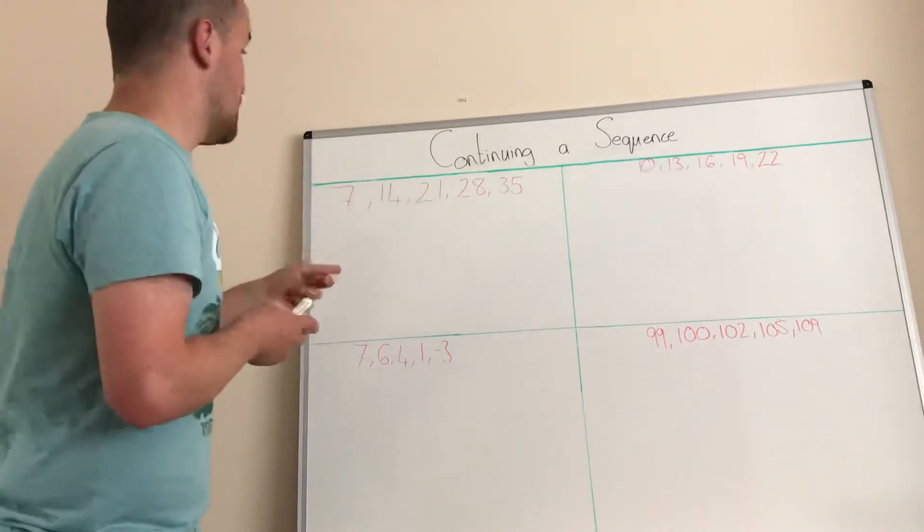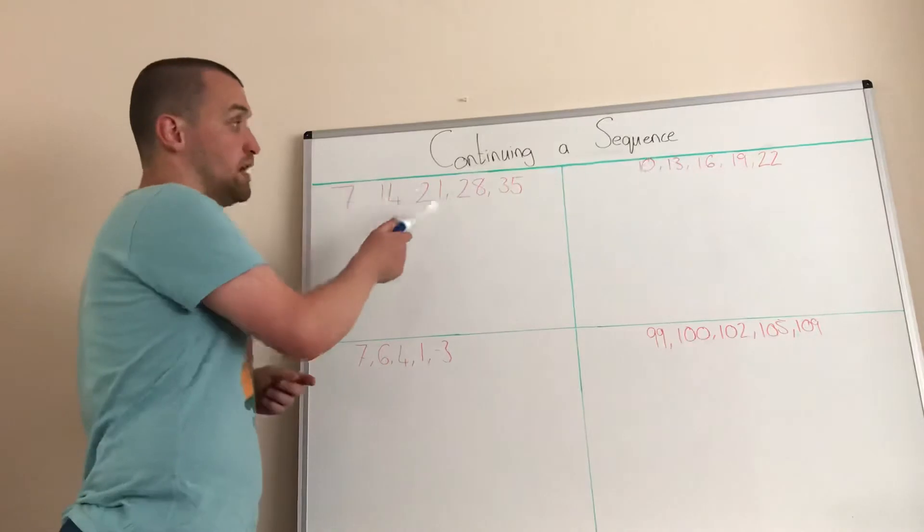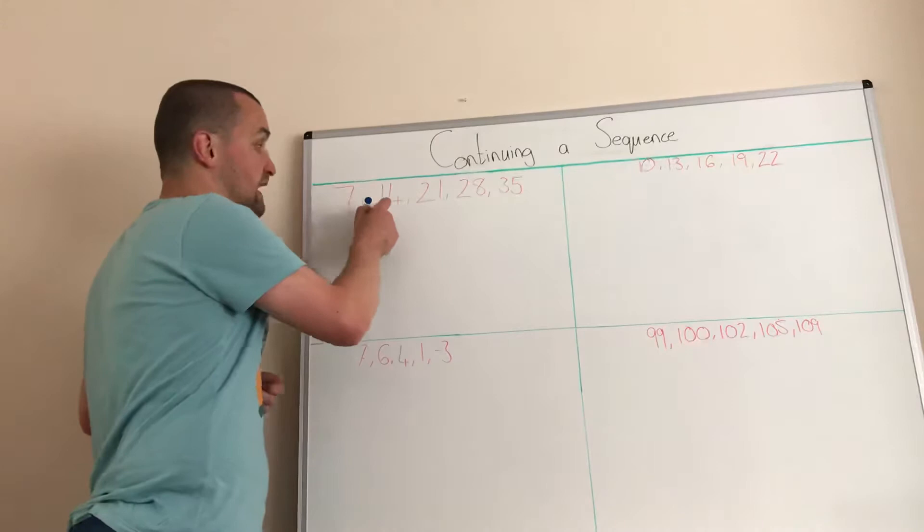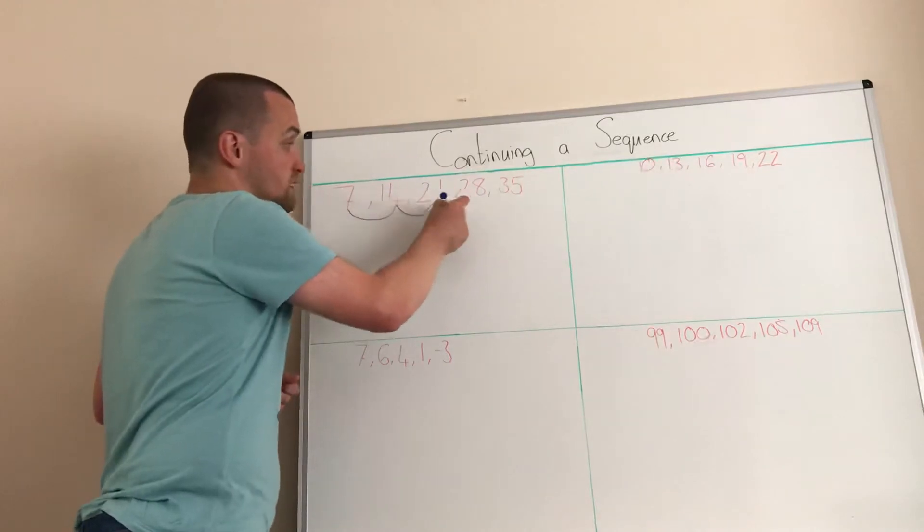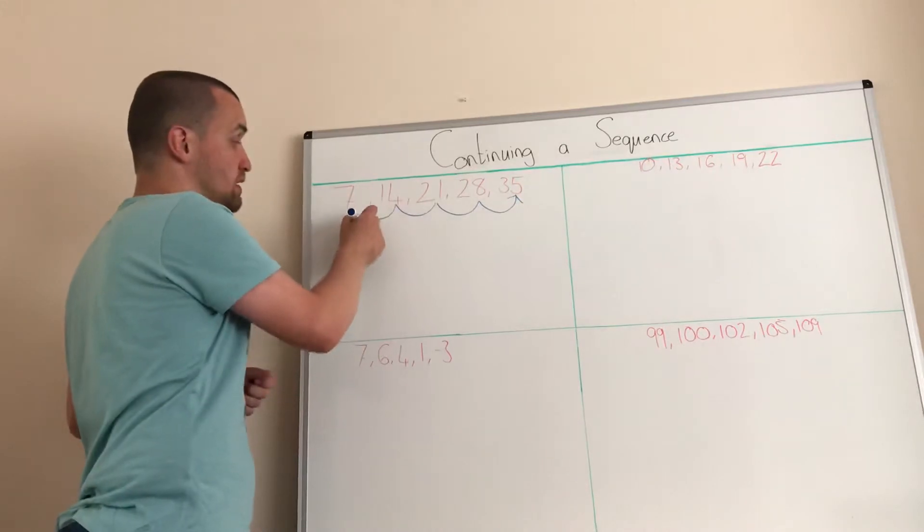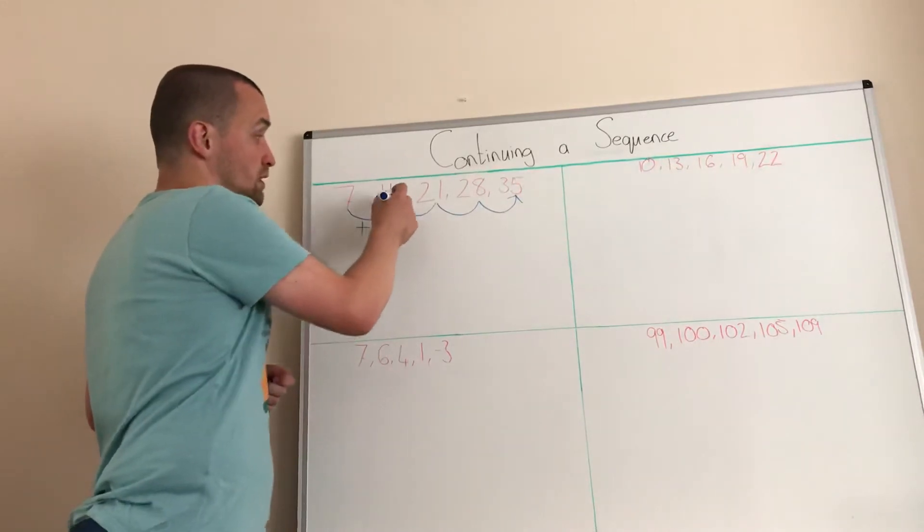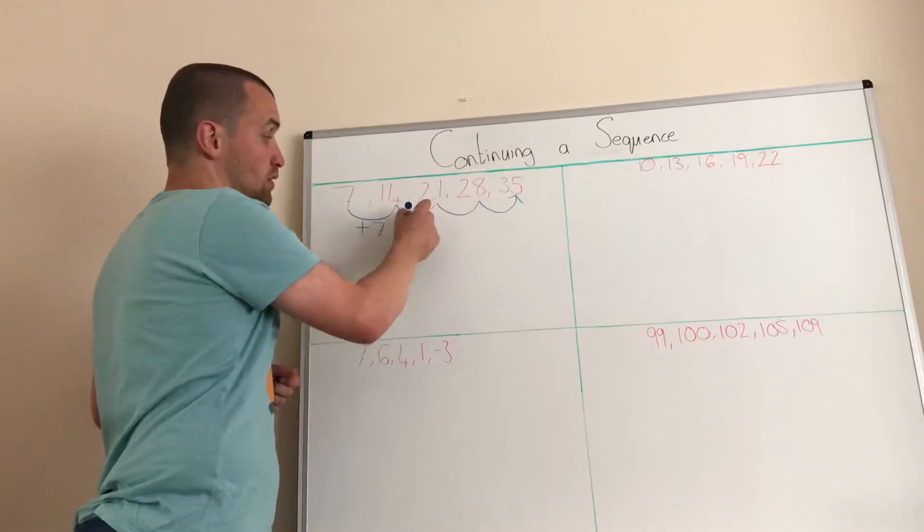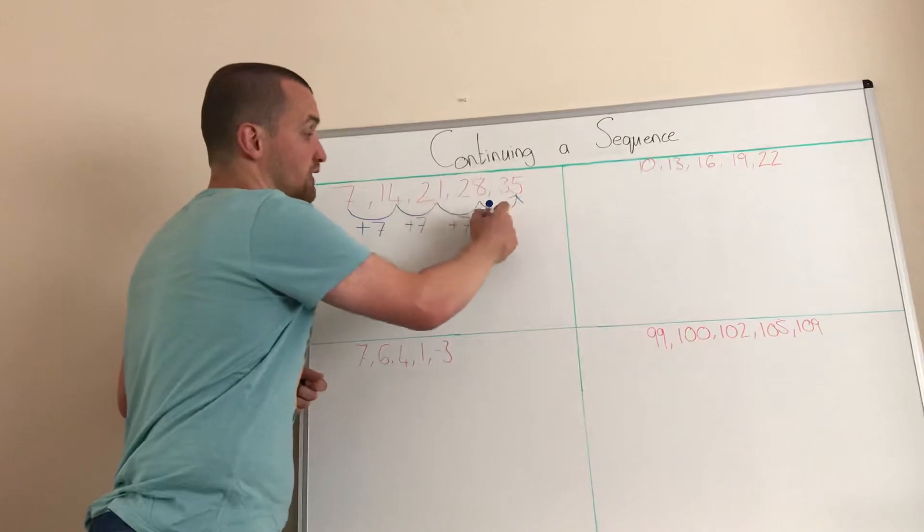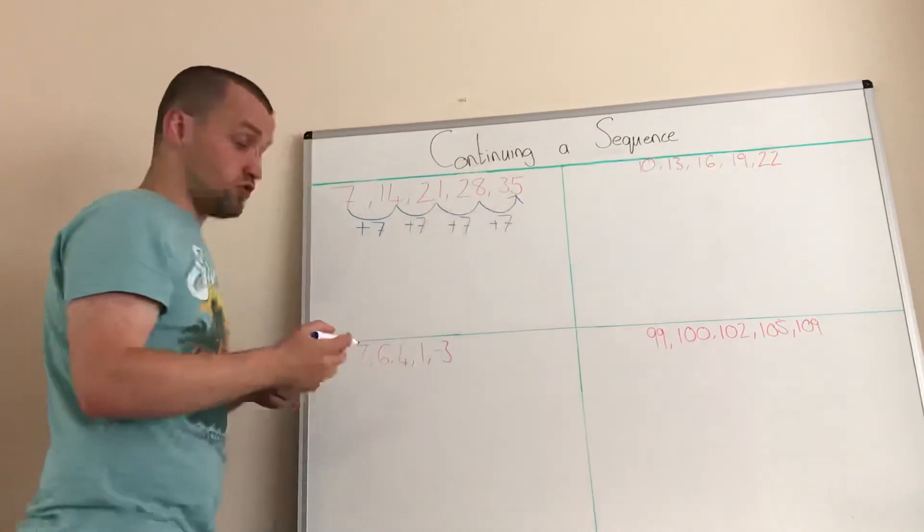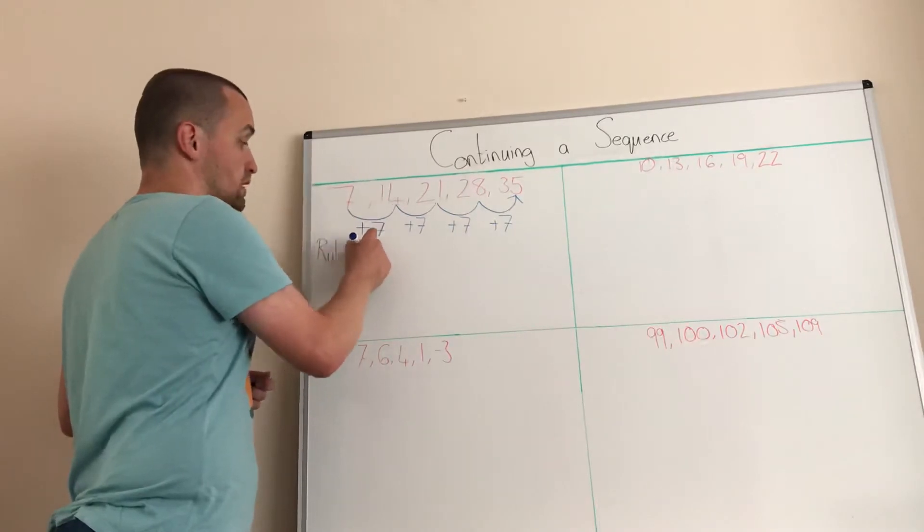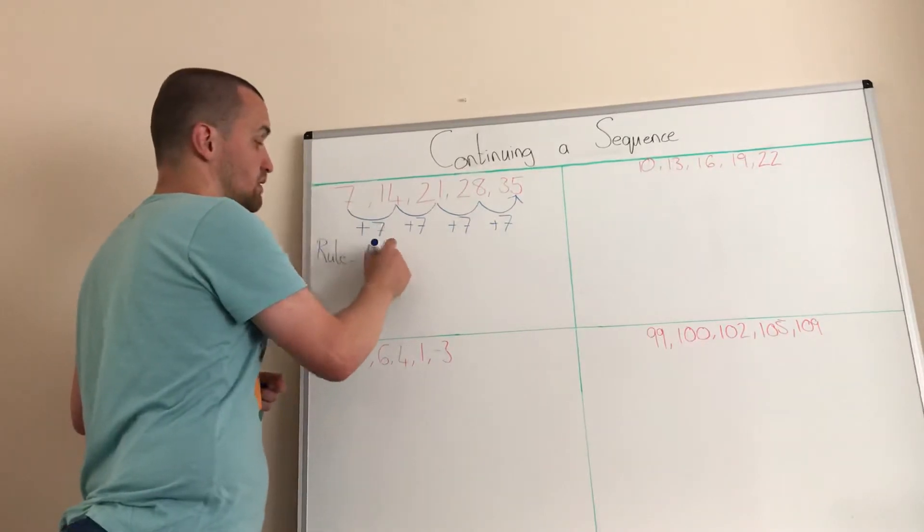So I've got four sequences. Sequence one: seven, 14, 21, 28, 35. The first thing we're going to do is find the difference between all of these. So from seven to 14, it's add seven. 14 to 21, we're adding seven. 21 to 28, add seven. 28 to 35, add seven. So the rule for that sequence is add seven.